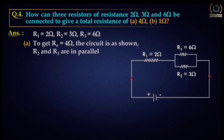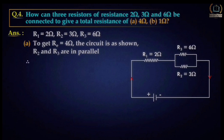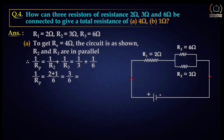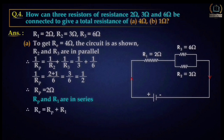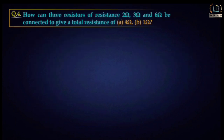R2 and R3 are connected in parallel, while R1 is connected in series. We find Rp = 1/(1/R2 + 1/R3) = 1/(1/3 + 1/6) = 2 ohm. Since Rp and R1 are in series, R = Rp + R1 = 2 + 2 = 4 ohm.